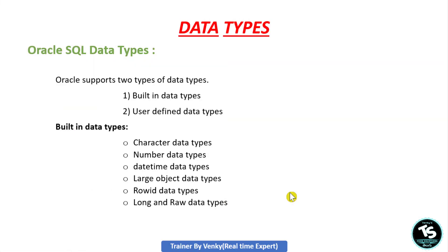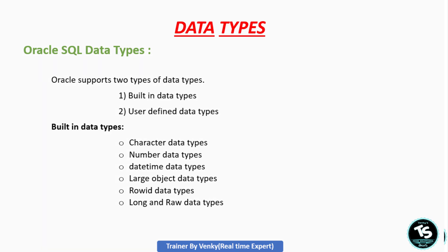Oracle supports two types of data types: one is built-in data types and another is user-defined data types. Built-in data types are the inbuilt data types supported by the Oracle software. User-defined data types are created by the user based on their requirement. The built-in data types include: character, number, date-time, large object, row ID, long, and raw. In this video we will learn about character, number, and date-time data types. This is part one; remaining data types will be covered in part two.